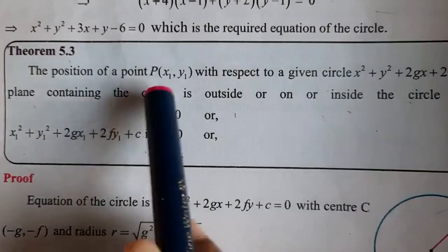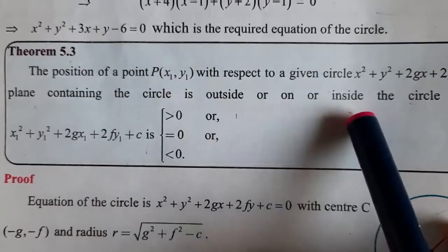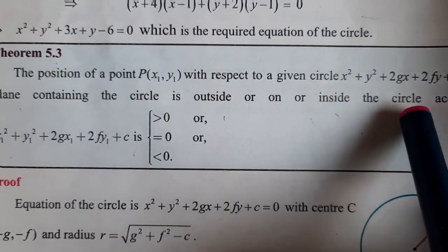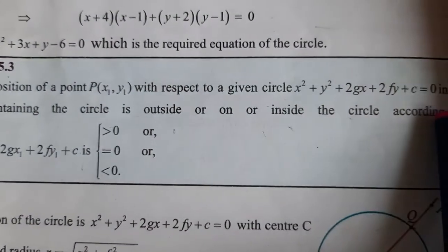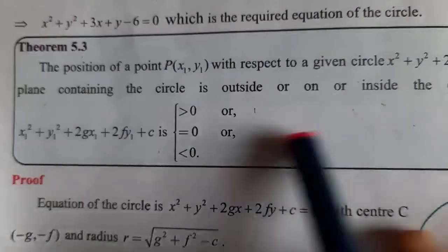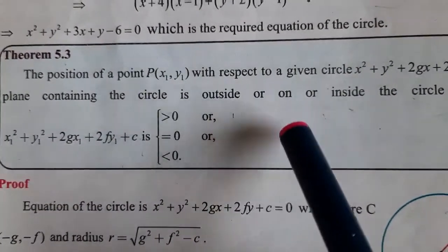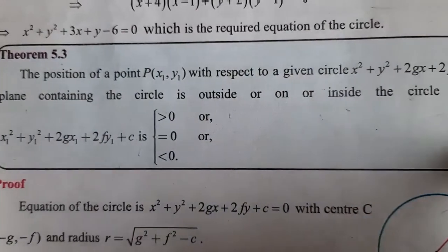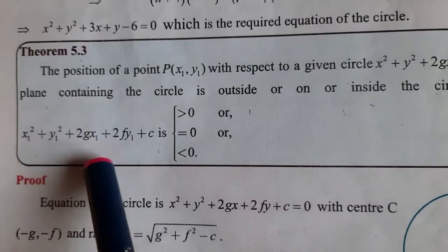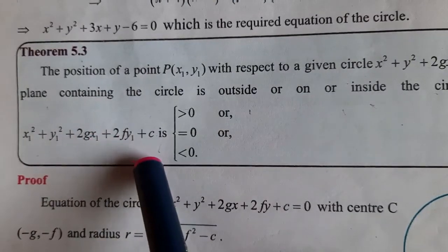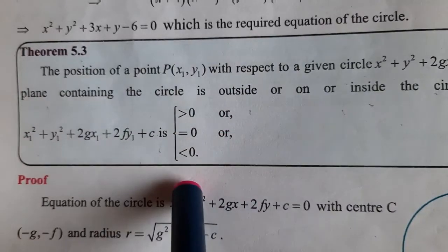The position of a point P(x1, y1) with respect to a given circle x² + y² + 2gx + 2fy + c = 0 in the plane containing the circle is outside, on, or inside the circle according as x1² + y1² + 2gx1 + 2fy1 + c is greater than 0, equal to 0, or less than 0.